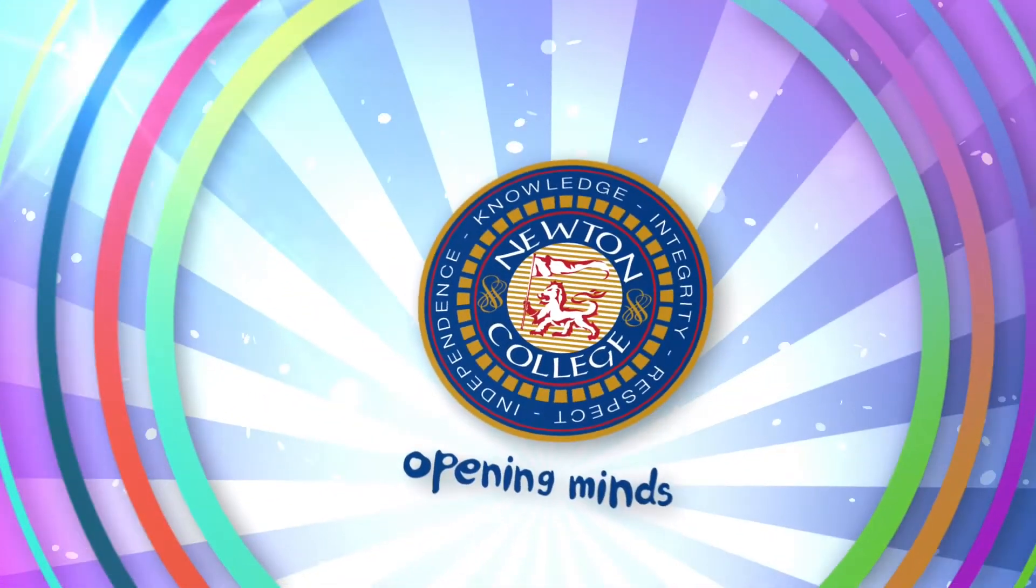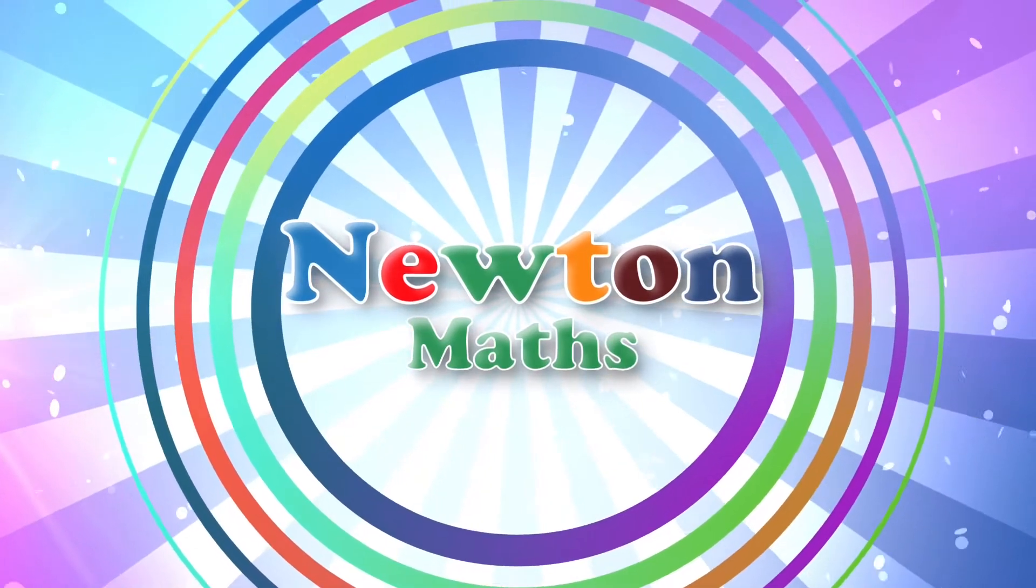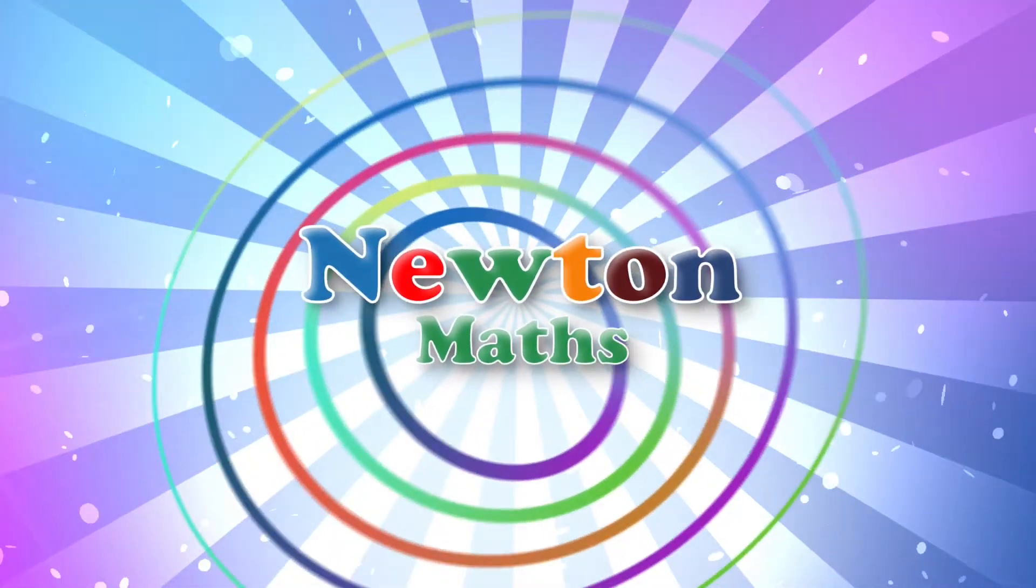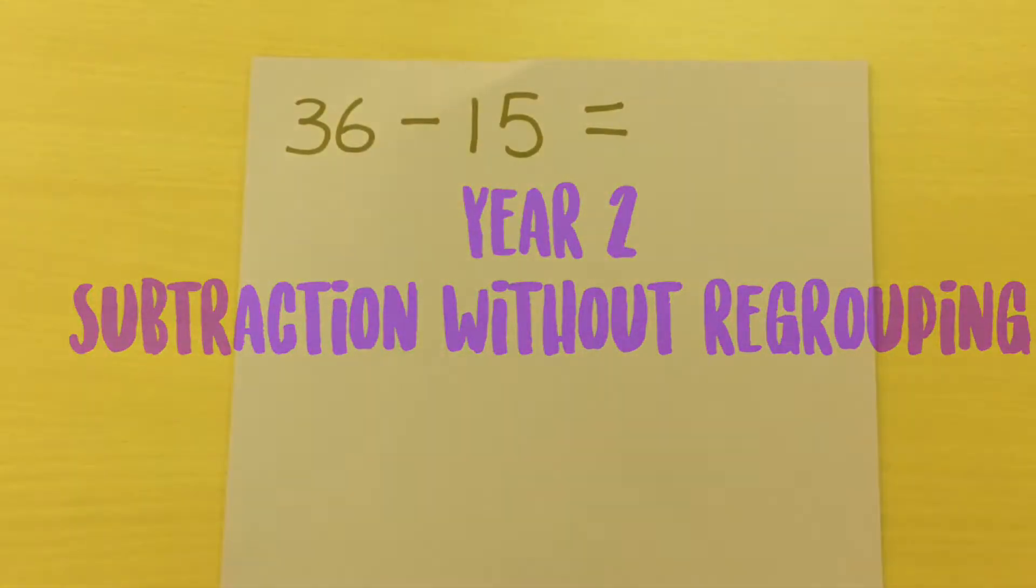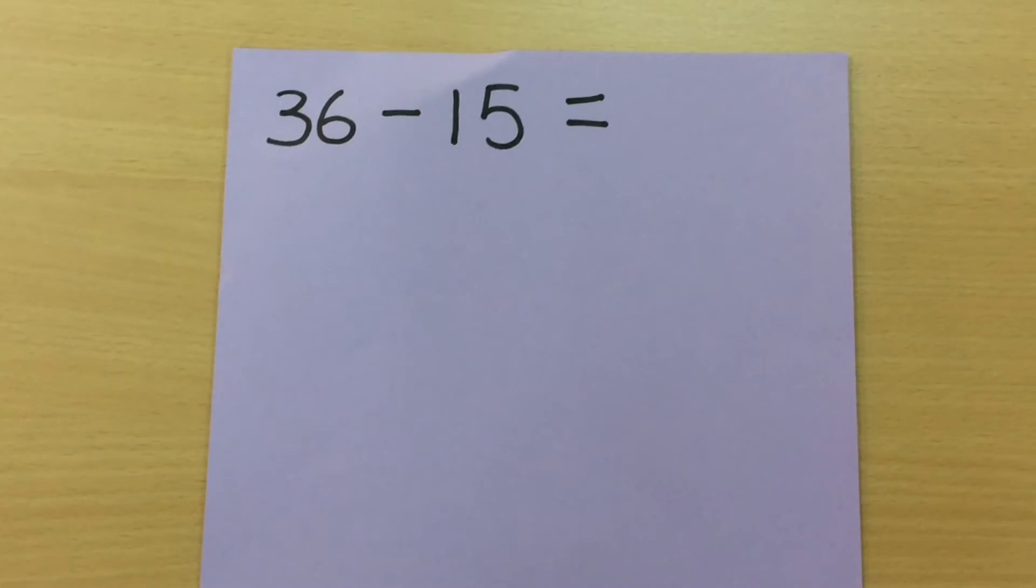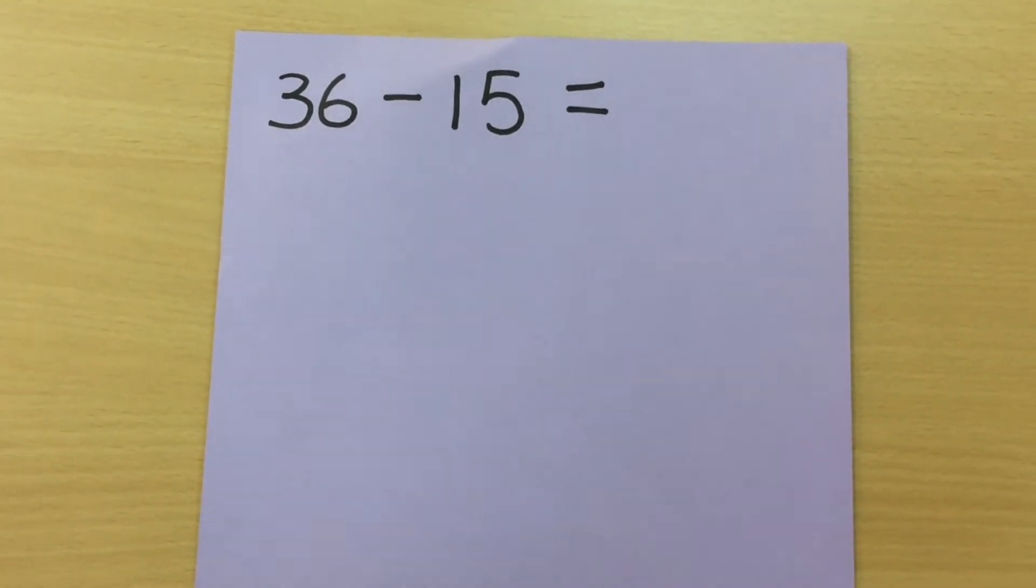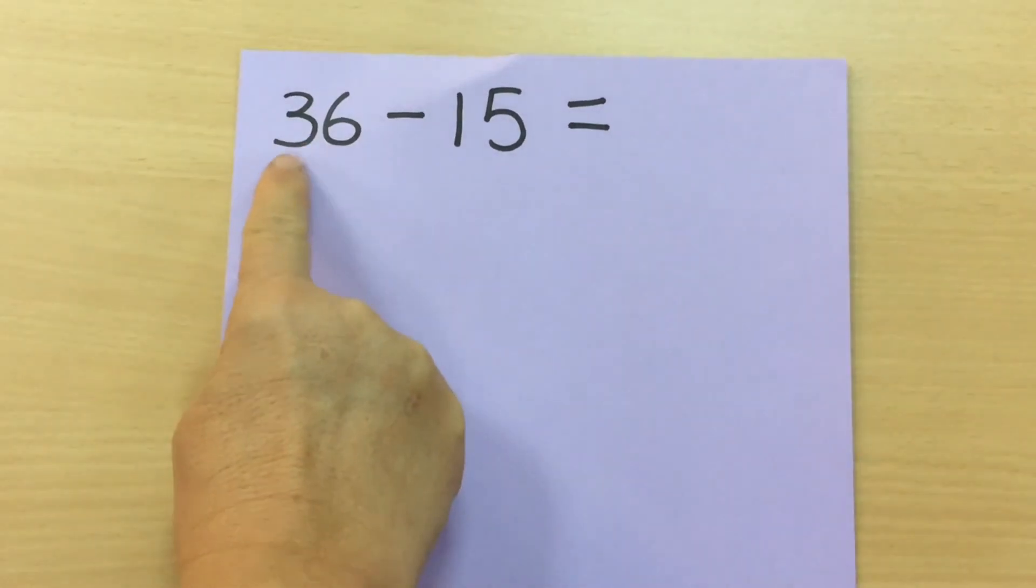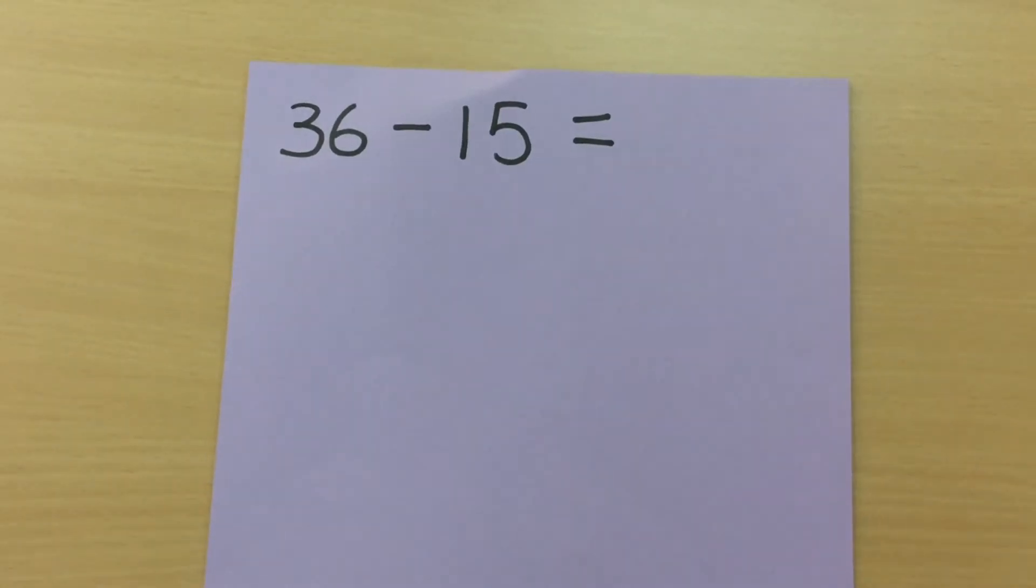All right, so moving on in subtraction into year two, it's still the same principle, but we are now subtracting a two-digit number from a two-digit number. So we've got 36 subtract 15, and the children will start to use the equipment to solve this first.